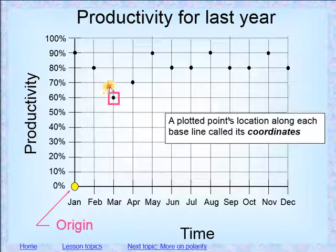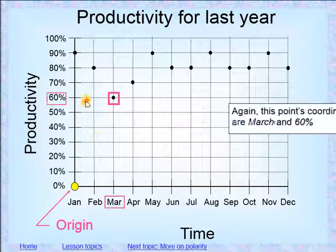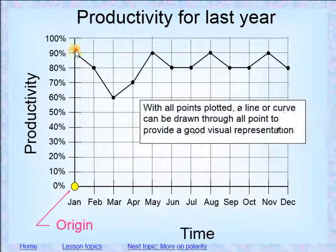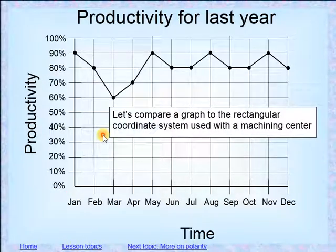Now, right here you'll see that each one of these points, or this point in particular, is called a coordinate. So each one of these is a coordinate on this graph. For this particular coordinate, it's March at 60% right here. And when you connect all of these coordinates, you get a visual representation of what's going on. So there's a productivity chart, but it works the same way as a Cartesian coordinate system for our G-code.